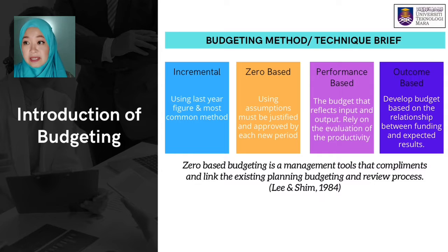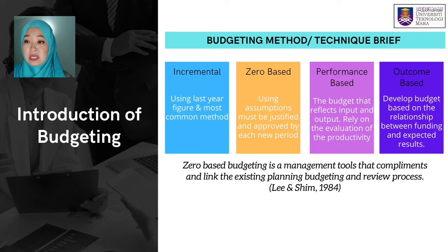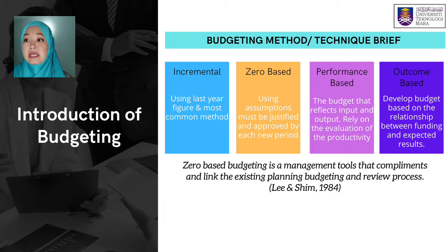There are four budgeting methods. Incremental uses last year's figures and is the most common method. Zero-based uses assumptions that must be justified and approved for each new period. Performance-based is a budget that reflects input and output relying on evaluation of productivity. Outcome-based develops a budget based on the relationship between funding and expected results. Zero-based budgeting is a manager tool that complements and links the existing planning, budgeting and review process. — Lee and Shea, 1984.